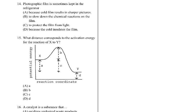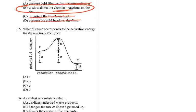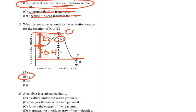Photographic film is sometimes kept in the refrigerator to slow down the chemical reactions on the film — that's what you want to do, cool it down to slow the rate of reaction. For the activation energy graph: here are the reactants, here are the products. The distance delta H is one measurement, and the activation energy is how much energy it takes to get up to the transition state. That corresponds to answer B.